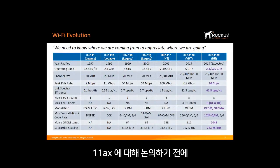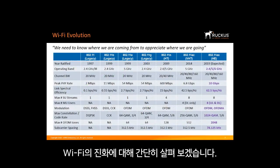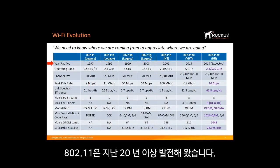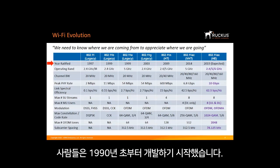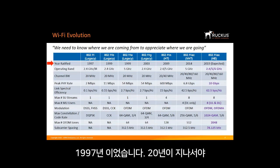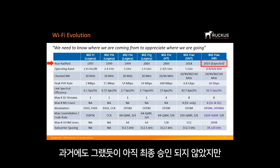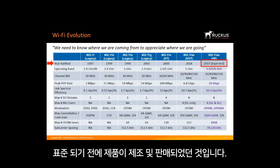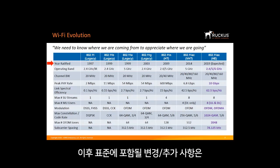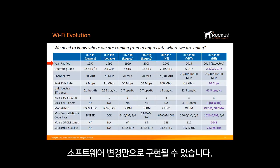Before discussing 11ax, let's briefly take a trip to the evolution of Wi-Fi. 802.11 has evolved over the past 20-plus years — people have been working on this since the early 1990s. The first standard was published in 1997, and 20 years later we are getting ready to ratify 802.11ax. It has not yet been ratified, but just like in the past, products are manufactured and sold before ratification. Changes beyond this point can all be accommodated through a software change.